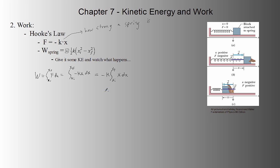And the integral of x is x squared over 2. So, this becomes negative k times x squared over 2 from x final to x initial, which becomes negative kx final squared over 2 minus x initial squared over 2.